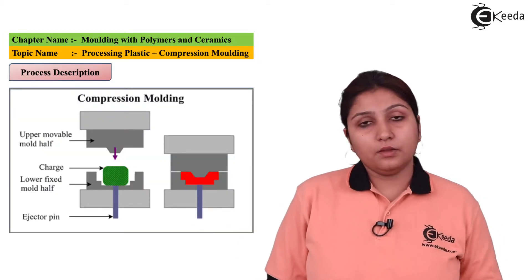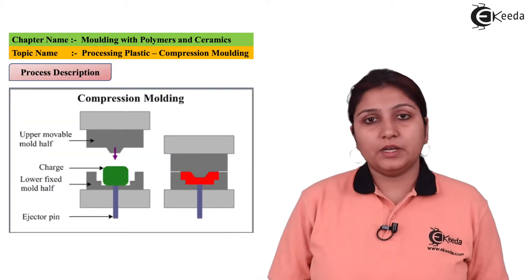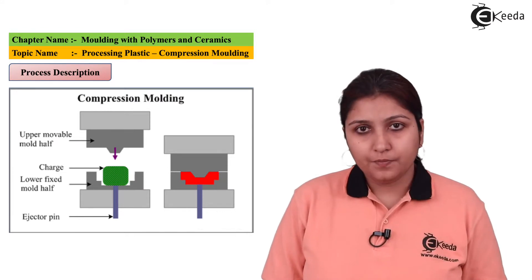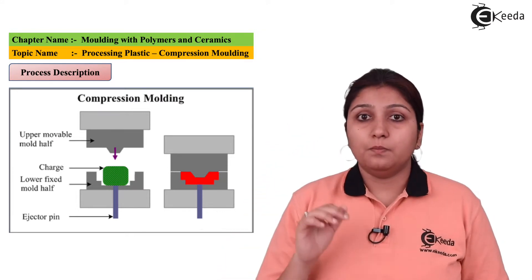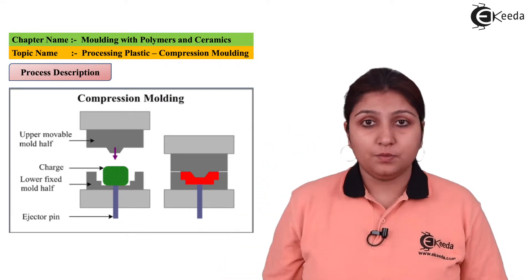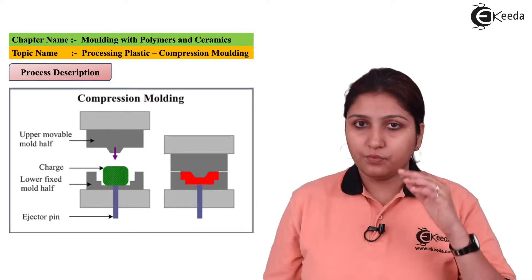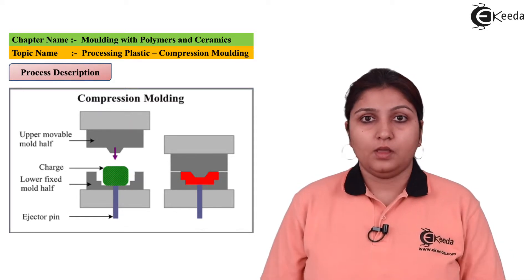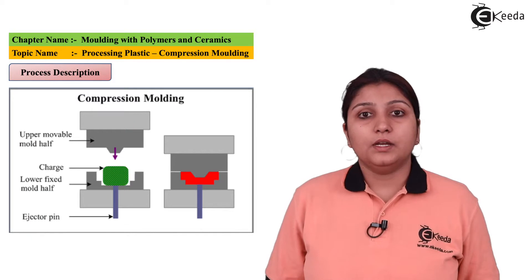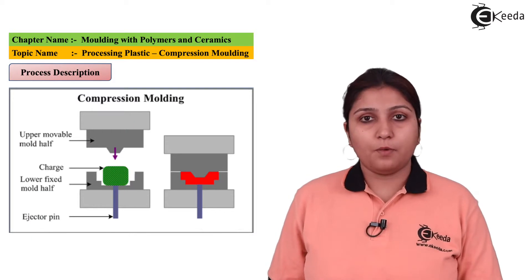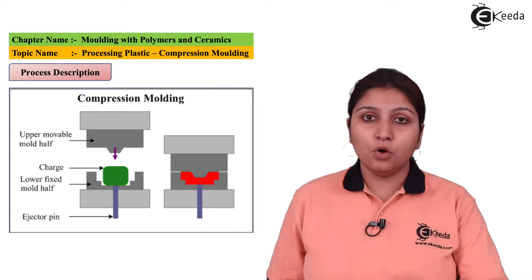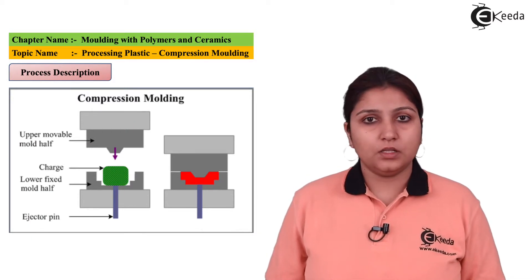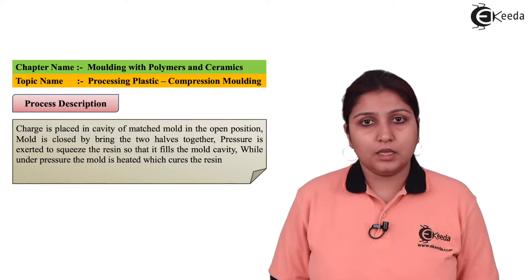In this diagram you can see that in the first part, the object is kept between the upper die and the lower die. The object is compressed between the two dies when the force is applied through the RAM, and finally the object takes the shape of the mold present in the upper as well as the lower die.